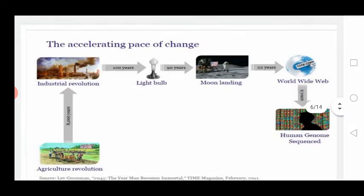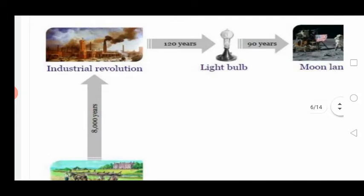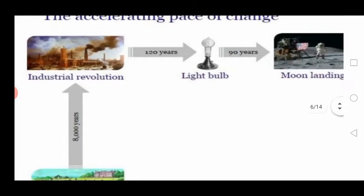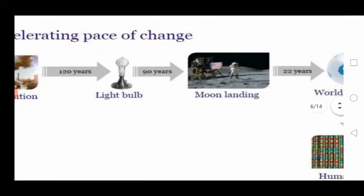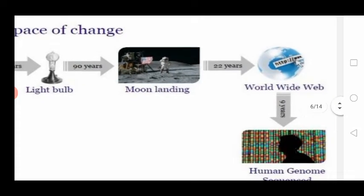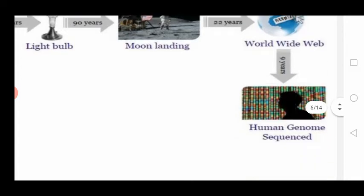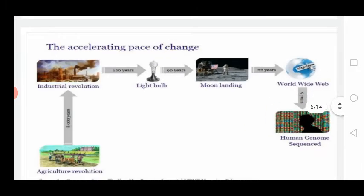We can see how things have been changing in phases. First there was the agriculture revolution, then after 8,000 years the industrial revolution, then the light bulb, moon landing after the 90s, the worldwide web, and then the human genome. That is where we started making machines that can think like humans — commonly called artificial intelligence and machine learning, which is the present trend.